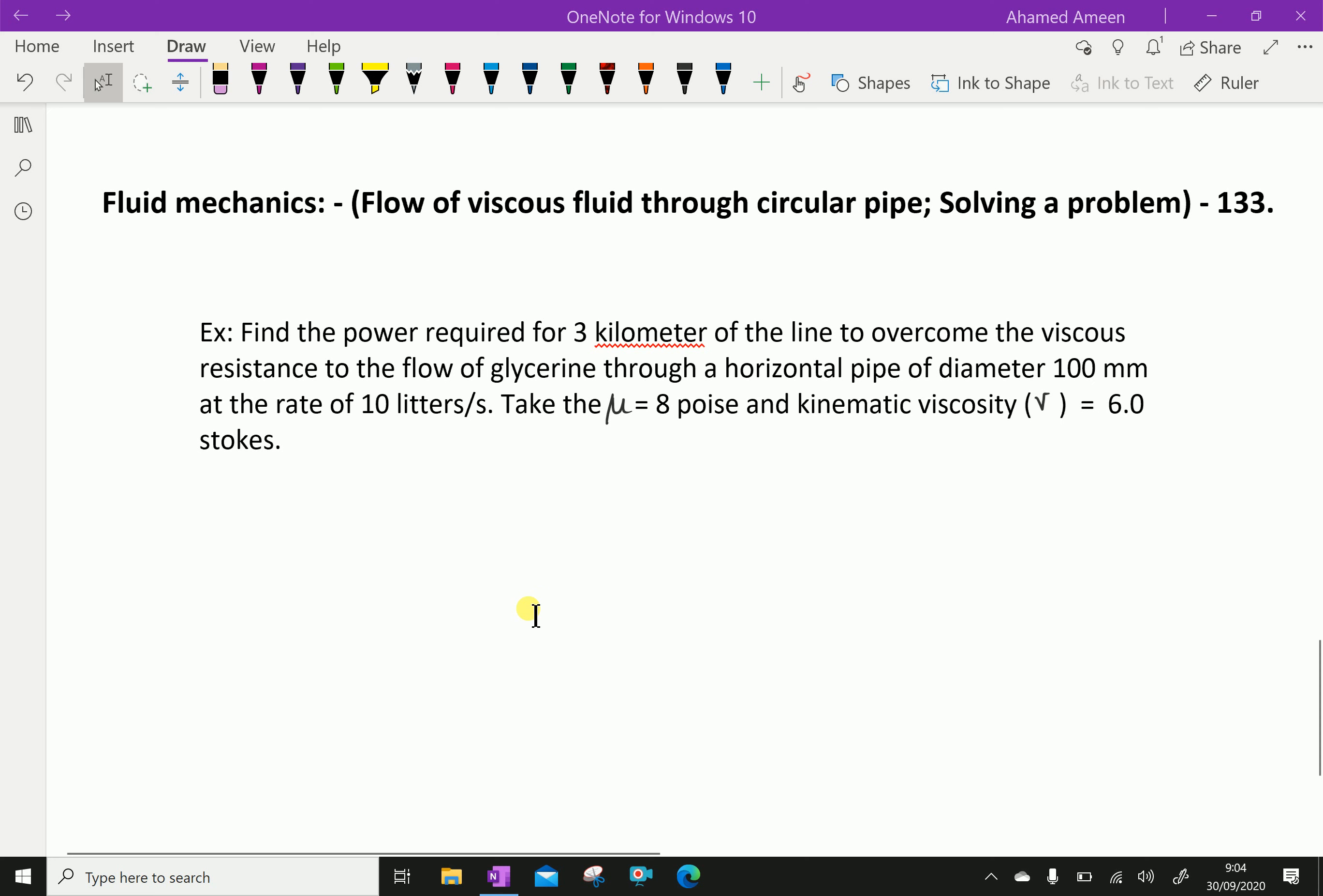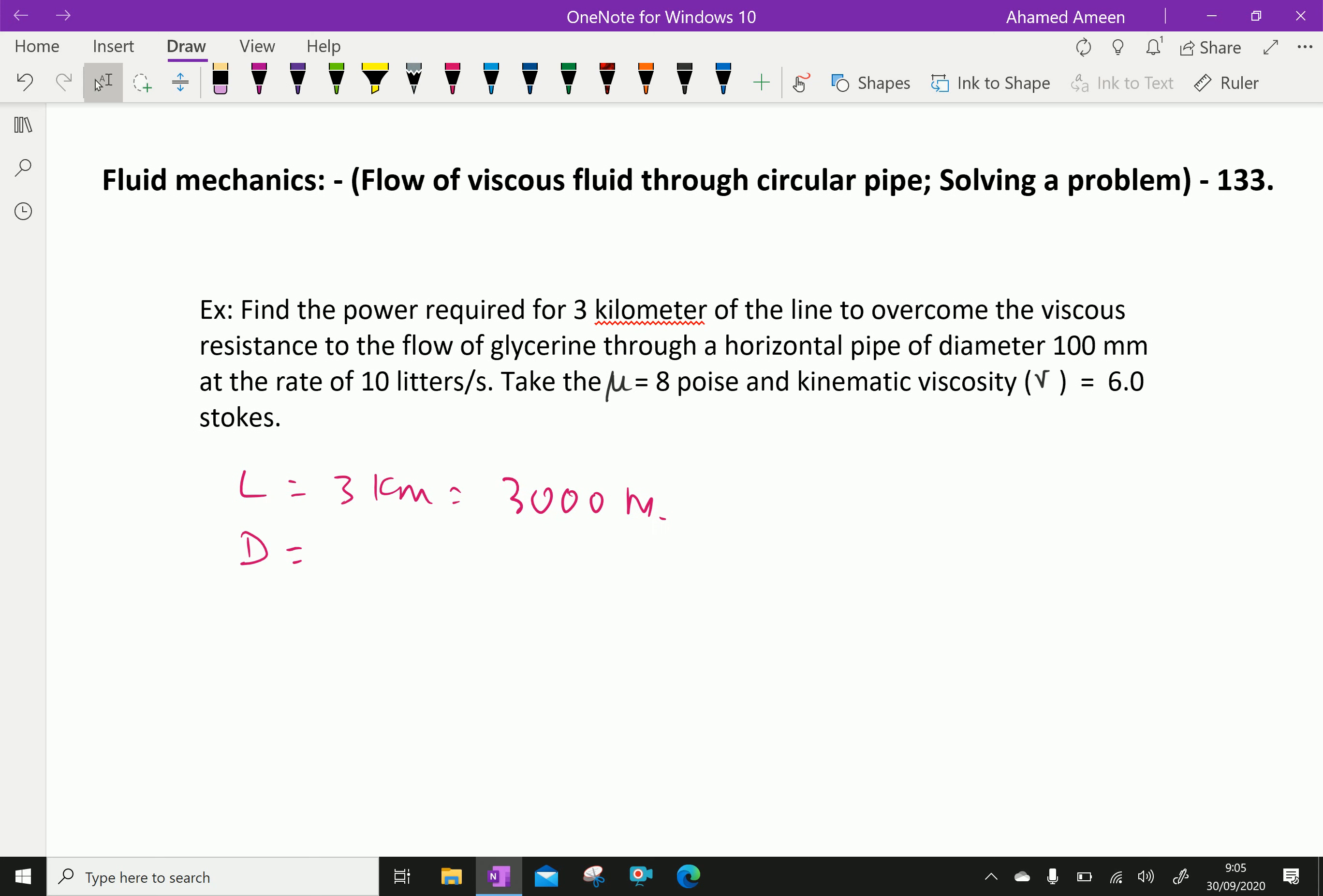Now write the given things. Length of pipe L equal 3 km which is equal 3,000 meters. Diameter of the pipe D equal 100 mm which is equal 0.1 meter.